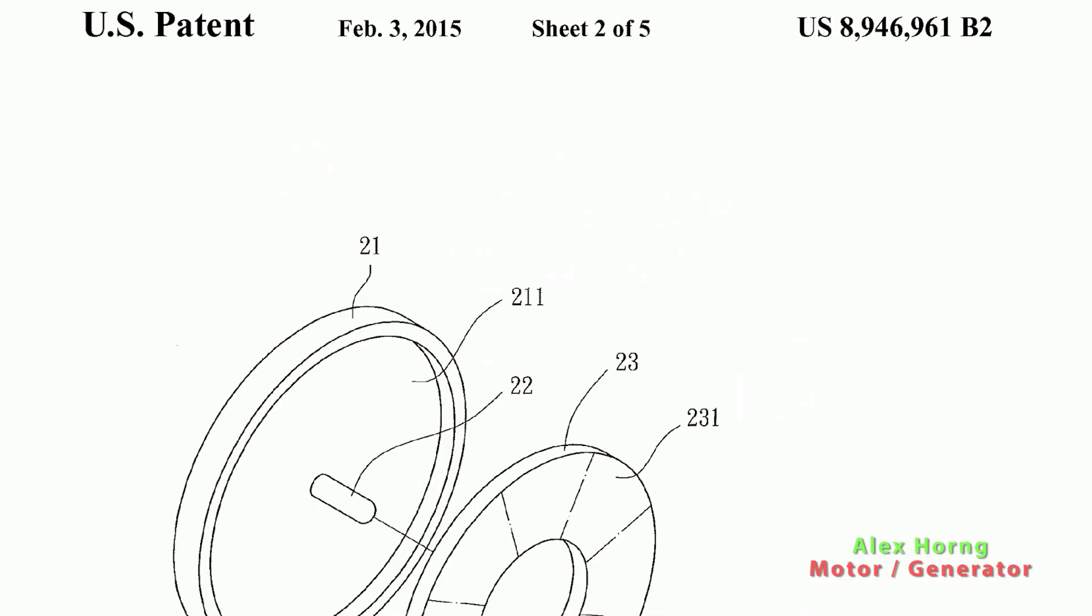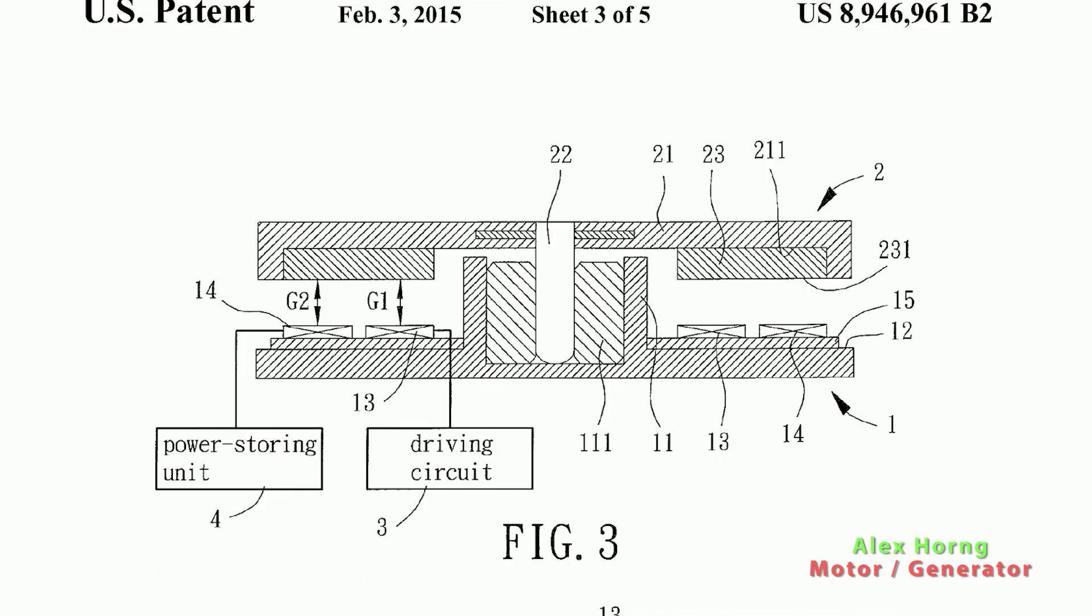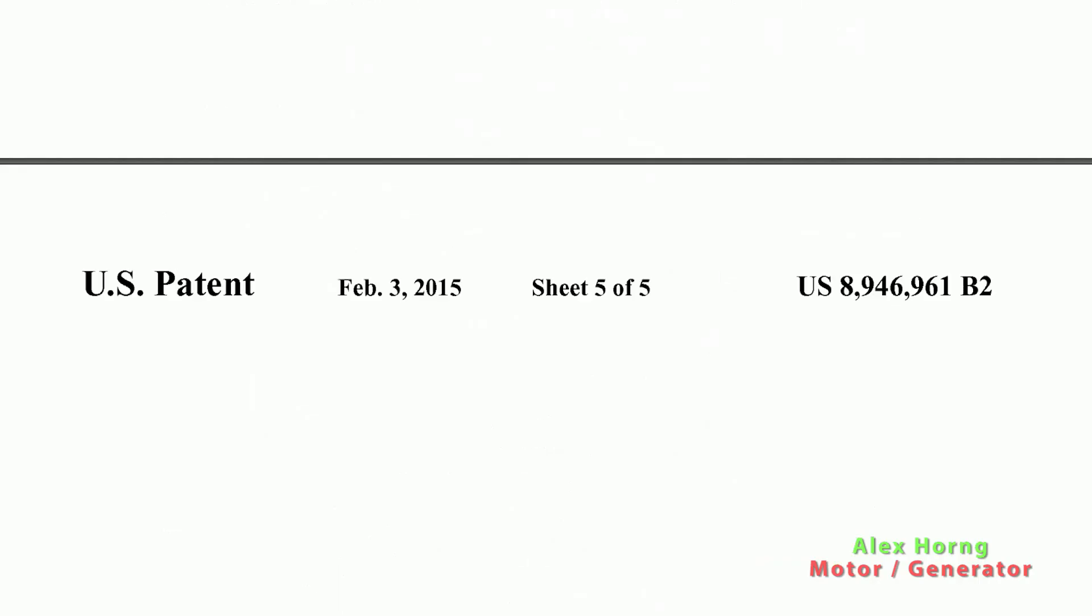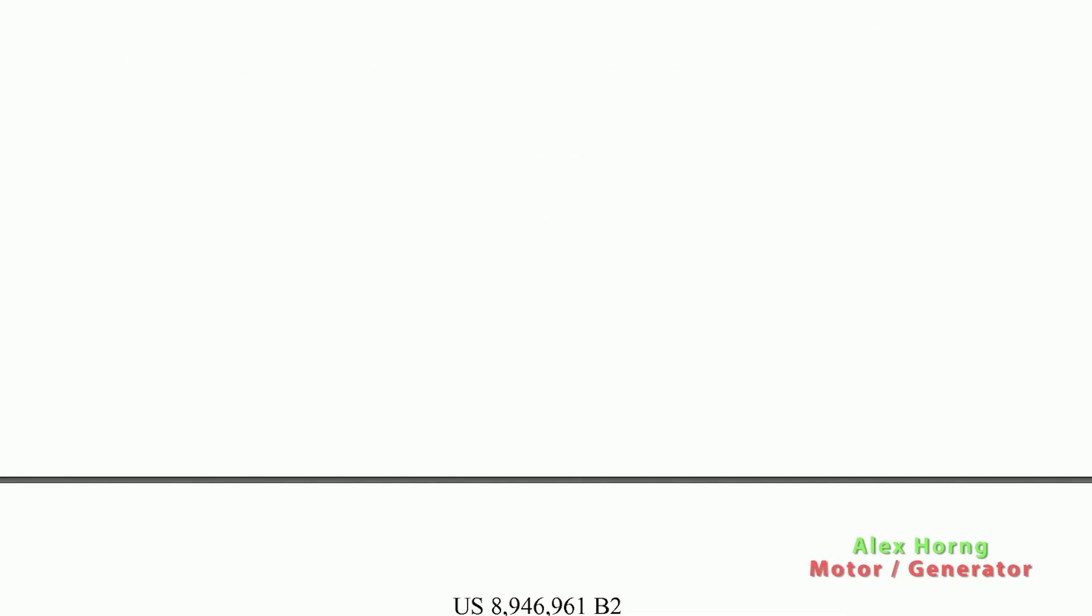It's a motor and generator in a compact design where we use the motor to spin the rotor and then we use the force of inertia on the generator, on the pickup coil set. So that's the case in the end.